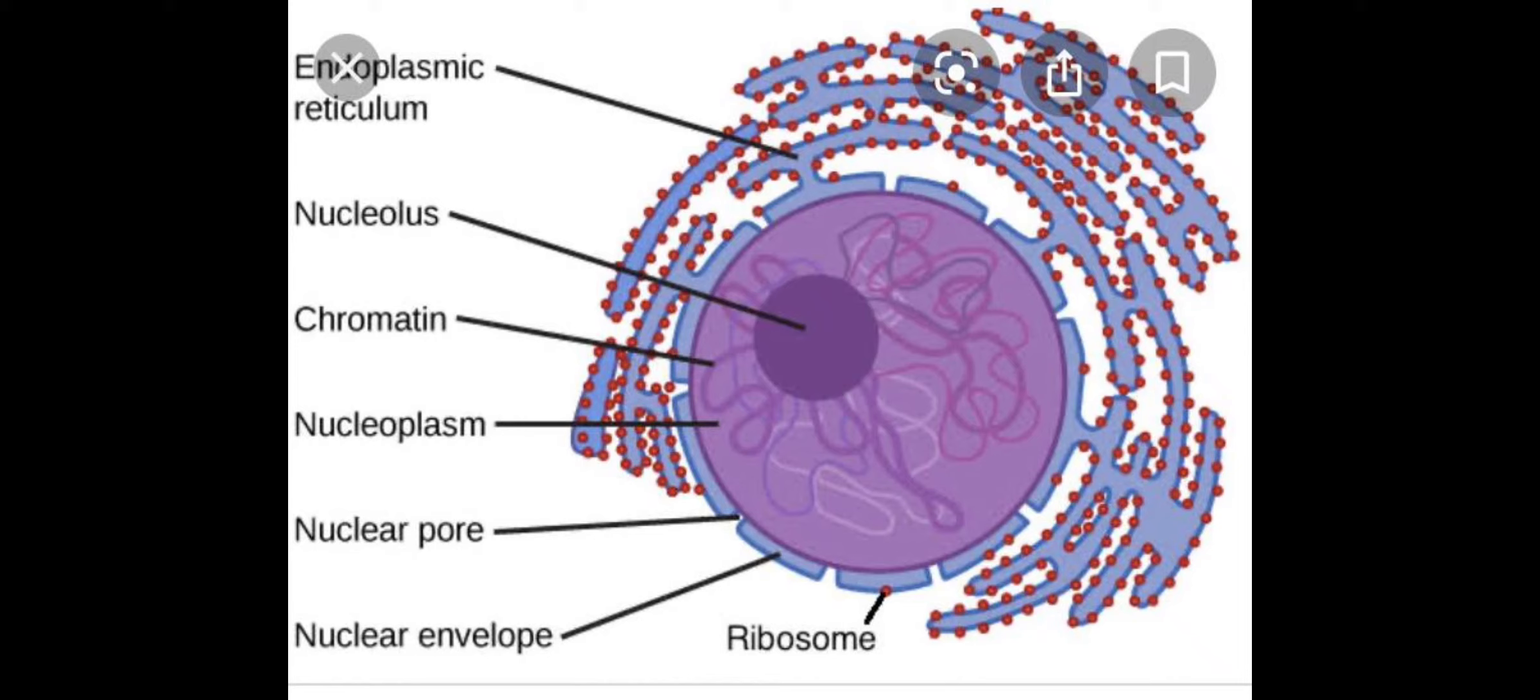Today we have learned about all the three organelles which have the double layered structure, that is they are covered by two envelopes. That's all for the day. Thank you.